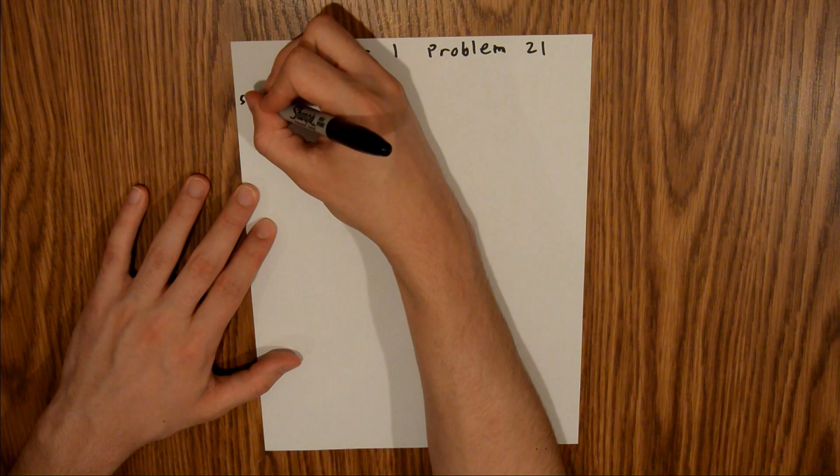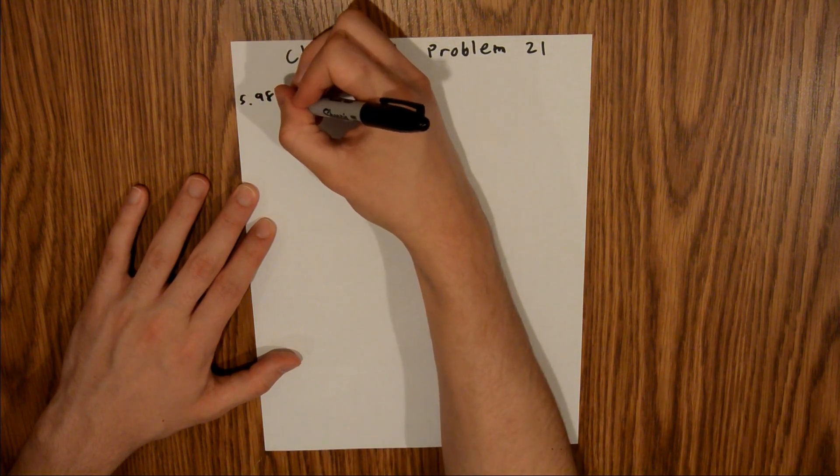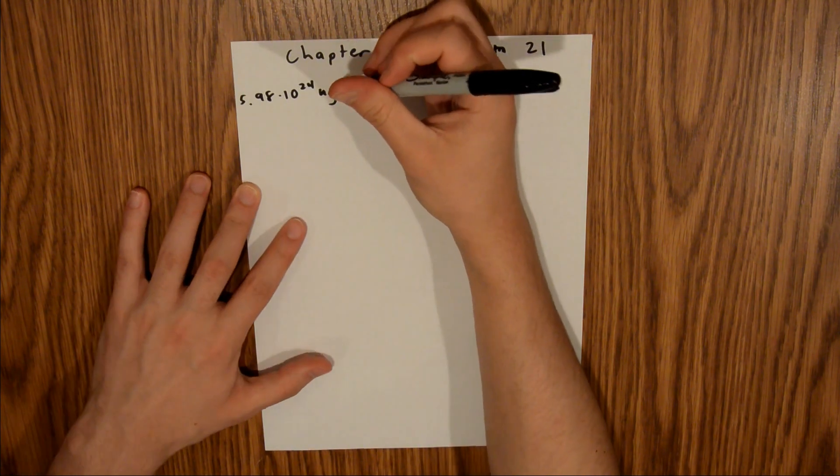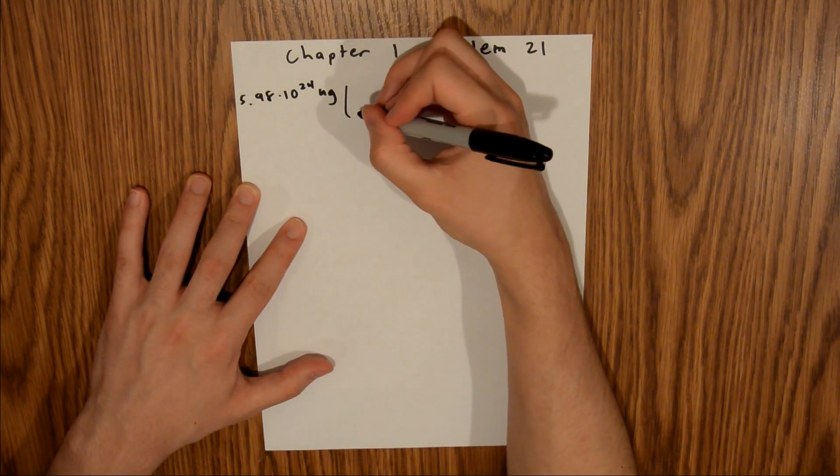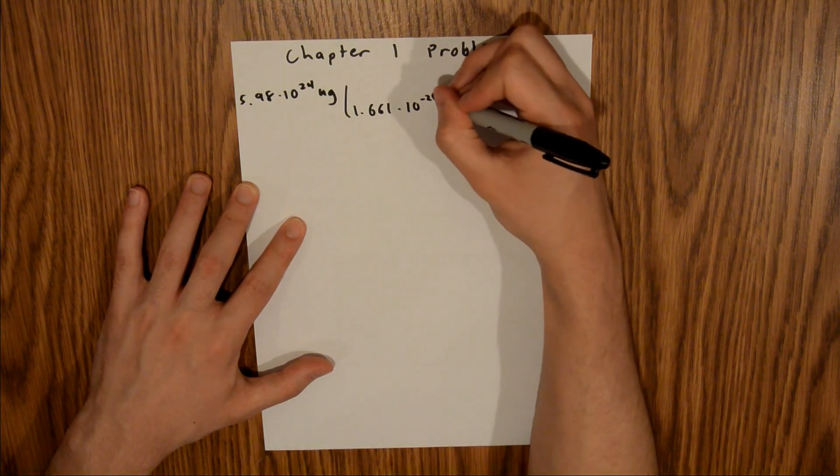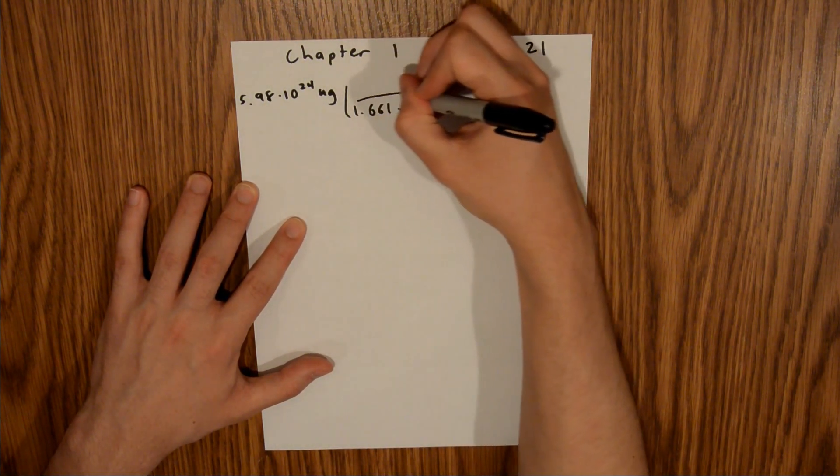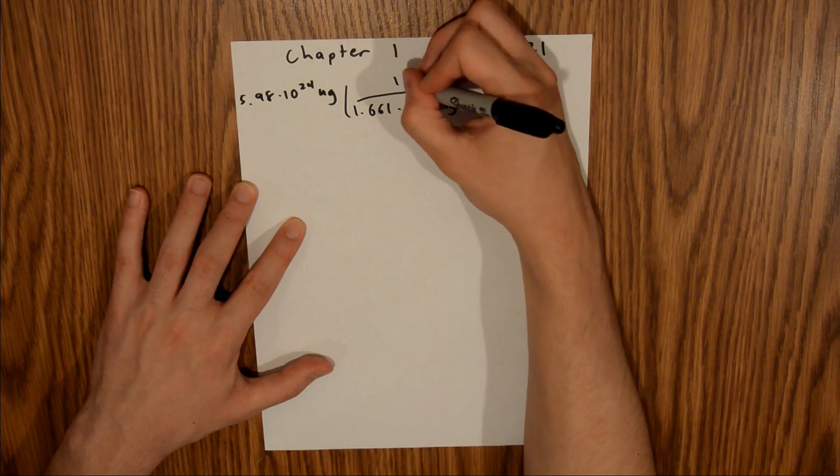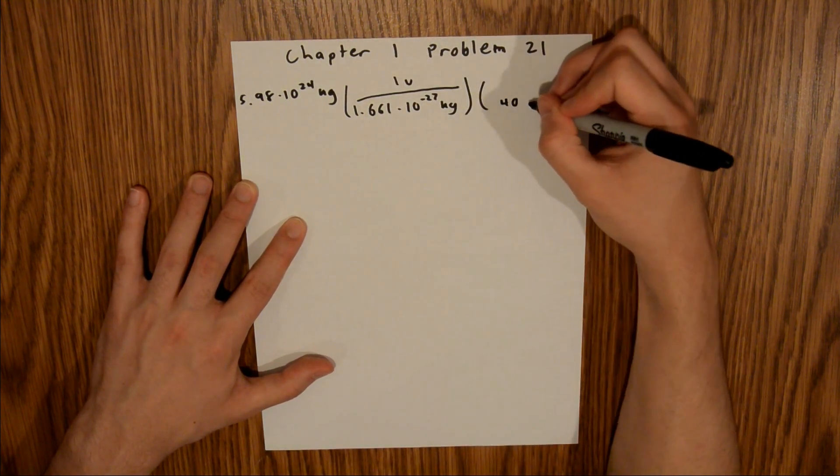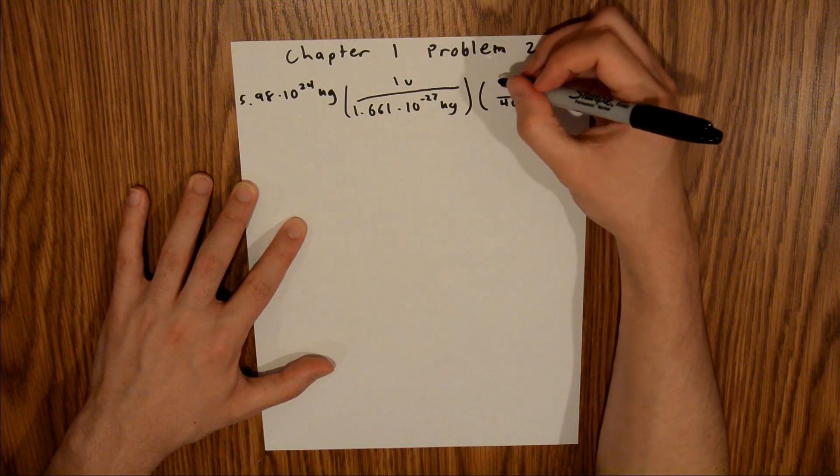We have 5.98 times 10 to the 24th kilograms, and we know that there are 1.661 times 10 to the negative 27 kilograms per atomic mass unit. And then we know that there are 40 atomic mass units per atom.